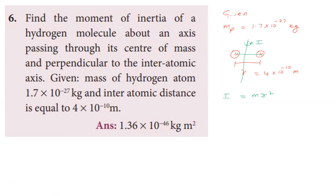For two particles, the moment of inertia is calculated as follows. Each atom is at a distance of R/2 from the axis. The first proton contributes M(R/2)² and the second proton contributes M(R/2)². So the total moment of inertia is 2 × M × (R/2)² = MR²/2.